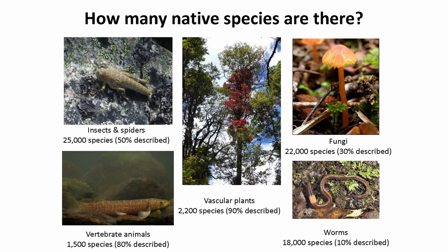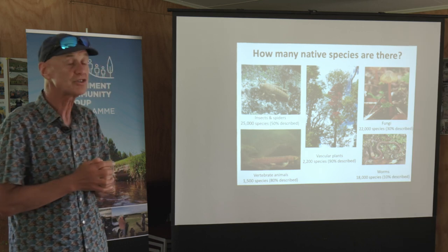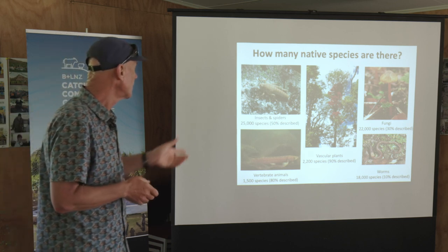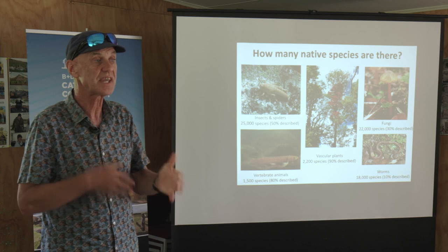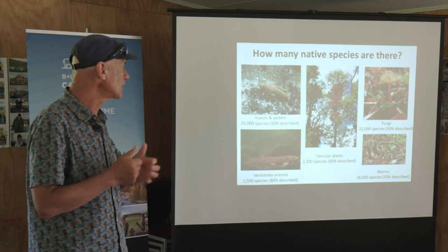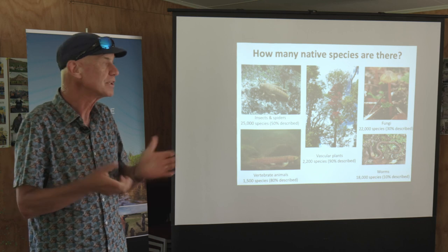If we look at the groups we know the most about, which are plants and animals with backbones — vertebrate animals — we've got something like 2,200 native species of plant in New Zealand and maybe 1,500 species of vertebrate animals: fish, birds, reptiles, those sorts of things. There are certainly quite a few species of those, but they're actually dwarfed by the number of perhaps less conspicuous species. We think we've got about 25,000 species of insects and spiders — the invertebrates — maybe 22,000 species of fungi, and maybe 18,000 species of nematodes and worms. We're incredibly diverse in those groups.